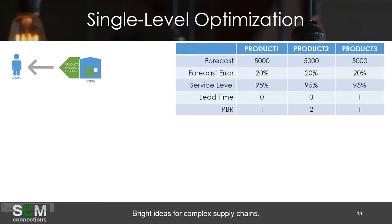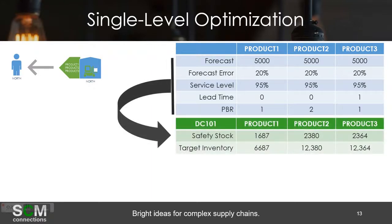With single-level optimization, you're going to calculate your safety stock. The calculation of safety stock in IBP Inventory could fill three hours of videos, but suffice it to say there are several inputs — these five being the biggest. Single-level optimization says: based on your forecast, accuracy, and service level, you need a safety stock of 1,687 for that product. Because your PBR is 2 instead of 1 for product 2, you'll need a bit more safety stock. With a longer lead time and PBR of 1, you might need a little less.